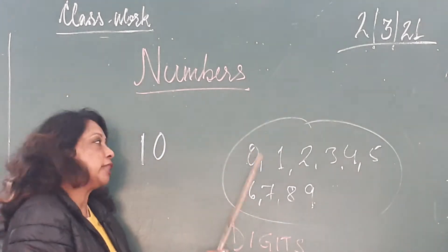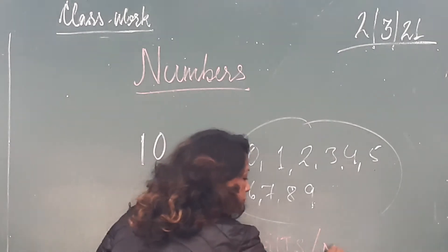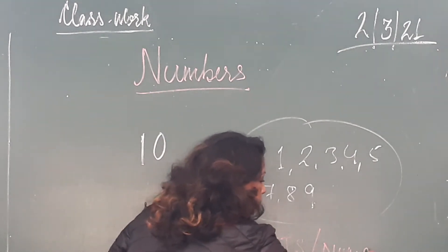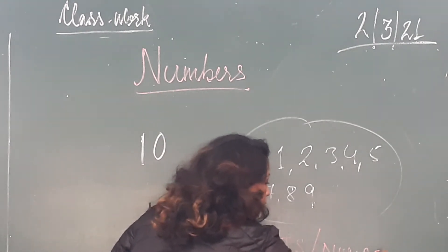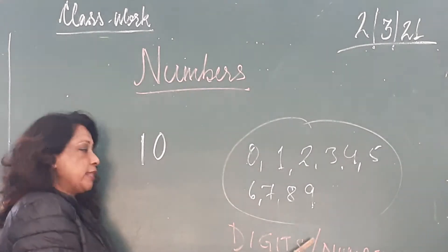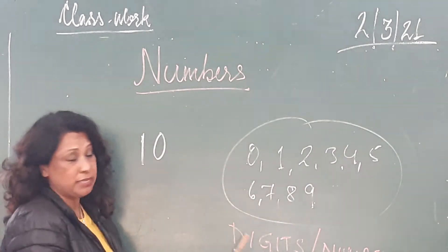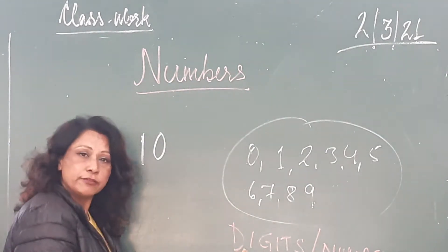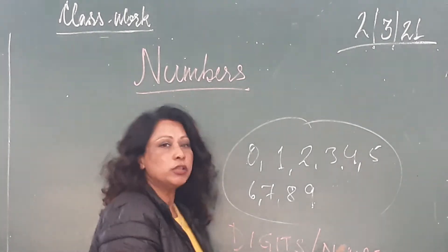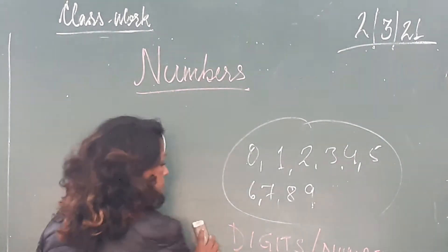They are called numbers or they are also called digits. Sometimes I might say 'digit' — don't get confused. Digit and numbers both mean the same thing.